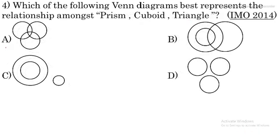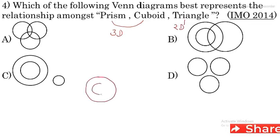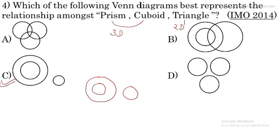Question 4: Which of the following Venn diagrams best represents the relationship amongst prism, cuboid and triangle? Prism and cuboid are 3D shapes, while triangle is a 2D shape. So prism and cuboid are grouped together and triangle is a different part. C option is the right option for this question.